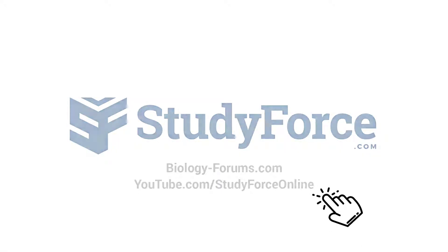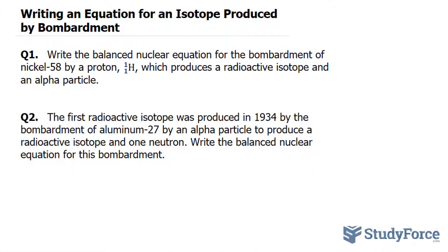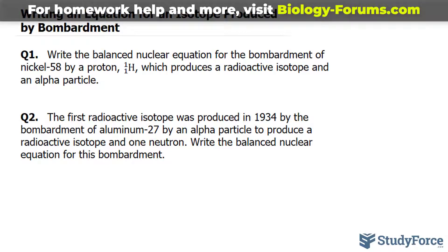In this lesson, I'll show you two examples on how to write an equation for an isotope produced by bombardment. Now before we begin, remember that an isotope is an atom of the same element with a different number of neutrons. So it has the same number of protons, keep that in mind.